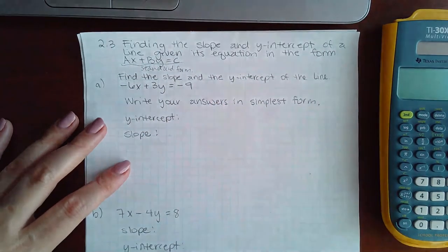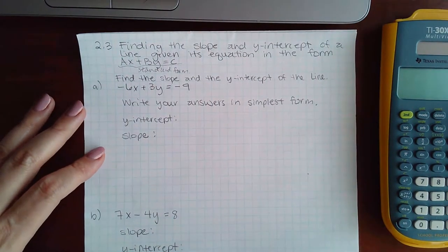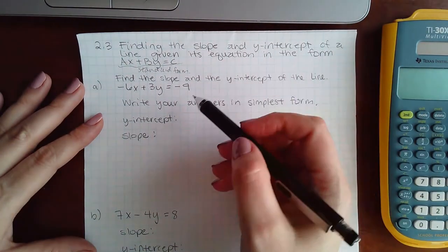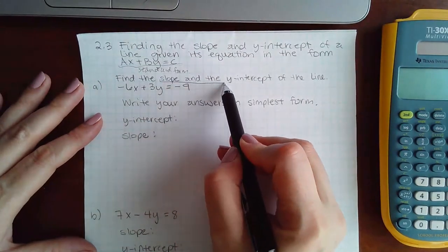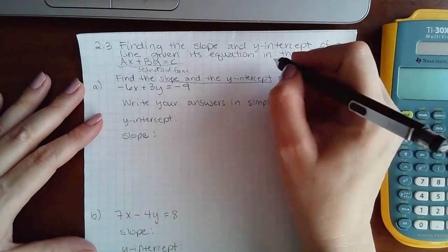We've seen that already before. So they gave it to us in standard form and what they want us to do is write it in slope and y-intercept form. That looks like this.